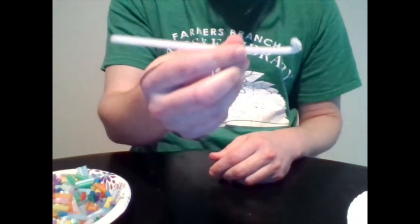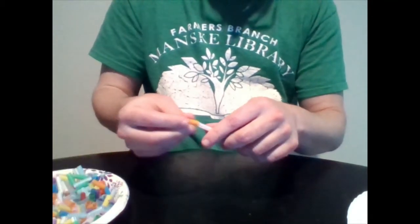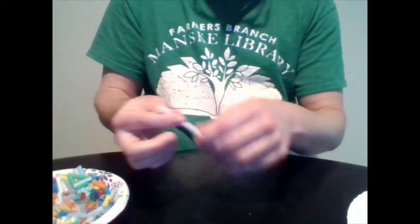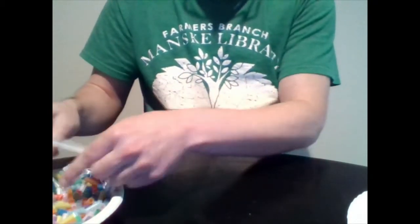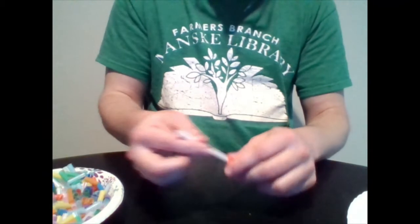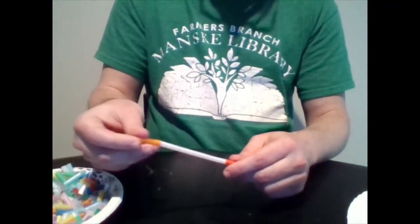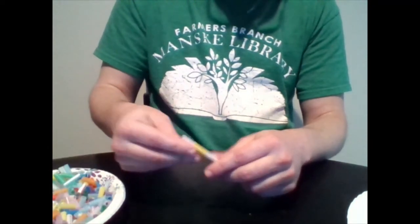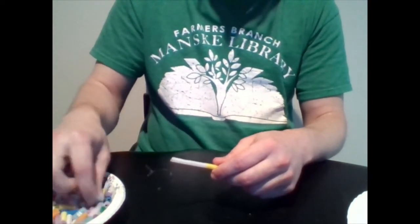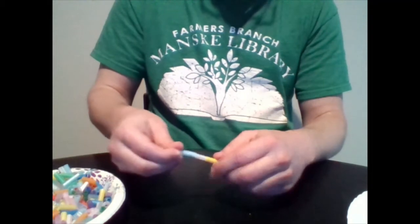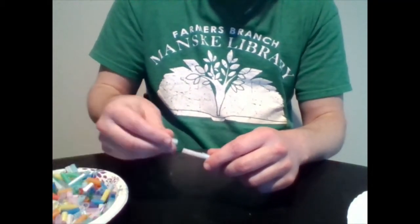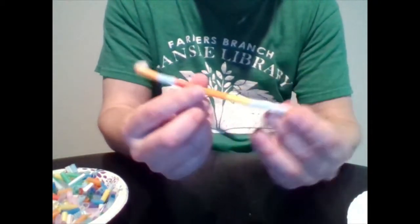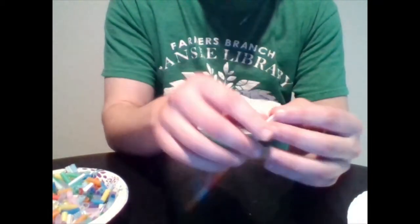Just like with your big piece, you want to bend the end of the pipe cleaner a little bit and then go ahead and stick some straw in there. I'm still picking those random pieces.